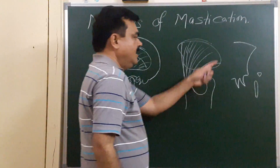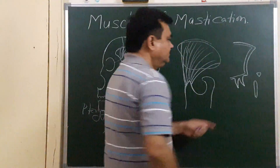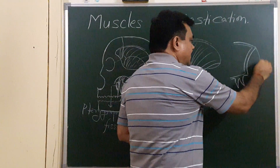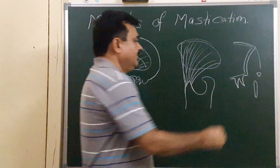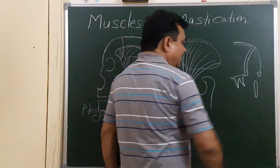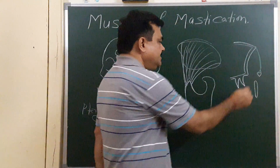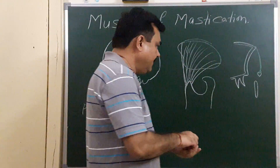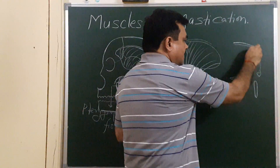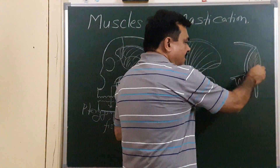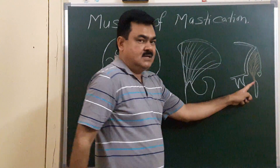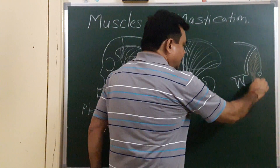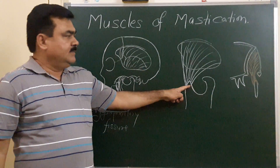In this coronal section, this is the temporal fossa. Here is the superior temporal line and here is the temporal fascia which covers this muscle. The temporal fascia splits and attaches on the medial and lateral lip of the zygomatic arch. The temporalis muscle takes origin from the temporal fossa, and some fibers also arise from the temporal fascia, and then it is inserted on the coronoid process — anterior border, posterior border, and also on the deep surface of the coronoid process.